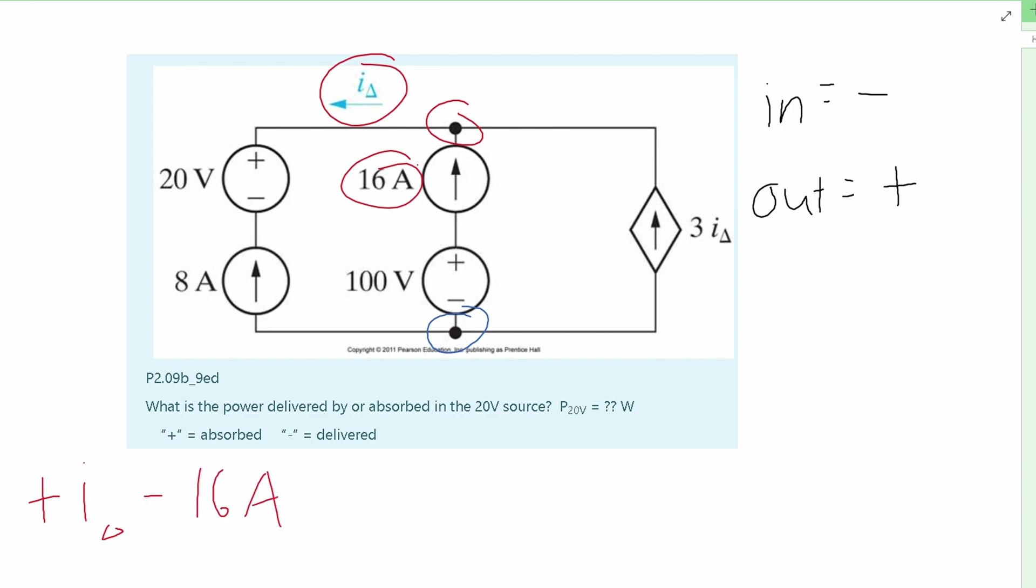After this, we have this 3 times I delta, which is going in, and since it's going in, that means it has to be a negative. So we're going to have a negative 3 I delta, and that's all equal to 0, because at the node, everything must equal 0.